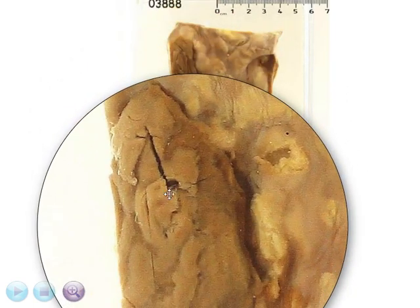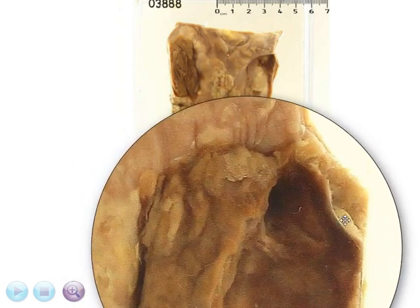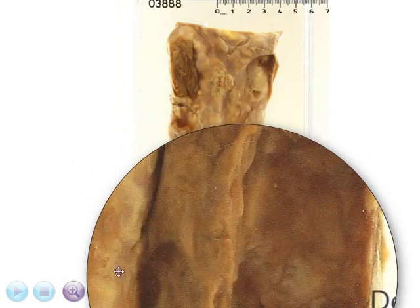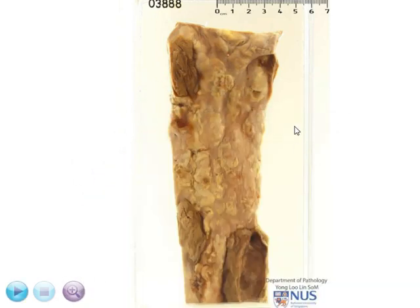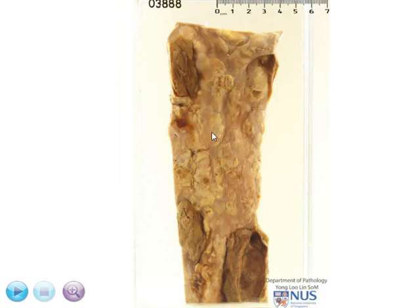I'm going to show you some other thrombi as well in this area. The complications of thrombosis would, of course, include embolization, and usually the emboli would go downstream following the direction of blood flow. It really depends on where the area of thrombosis is — the emboli can be at the smaller vessels supplying the lower limb, or they can go into other branches of the aorta, such as the renal arteries.